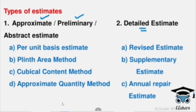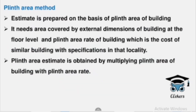The first method is the Per Unit Based Estimate — it's very simple. In the case of the per unit method, we get the estimate on a per unit basis. The second method is the Plinth Area Method. The Plinth Area Method is based on the total built-up covered area of the building, and we prepare the estimate using that plinth area.